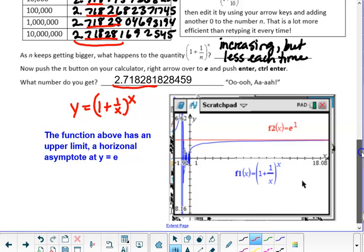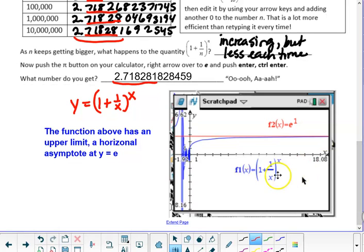What's interesting is, if we were to graph the function 1 plus 1 over x to the x power, and just let x get bigger and bigger and bigger, what happens is that the function has an asymptote, and it levels off to the number E.